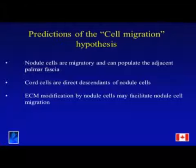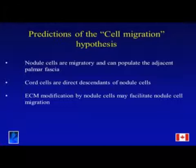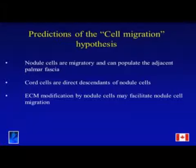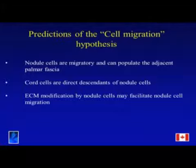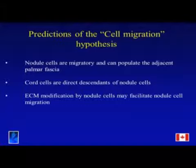For some reason that none of us understand as yet, a nodule forms in or adjacent to the palmar fascia. This nodule develops some kind of migratory ability, migrates down the fascia, the cells differentiate, and as they go along they form myofibroblasts, interact with the fascia and contract it, so you end up with a cord. Predictions of this hypothesis include: nodule cells are migratory and can populate the adjacent palmar fascia; cord cells are direct descendants of nodule cells; and ECM modification by nodule cells may facilitate nodule cell migration.